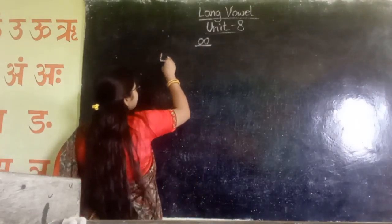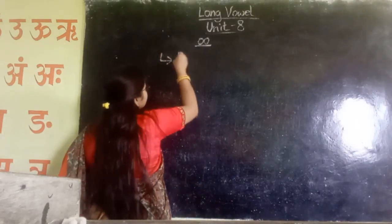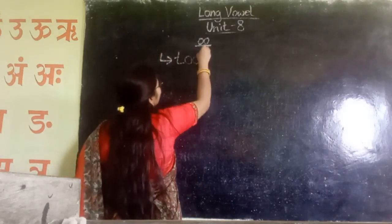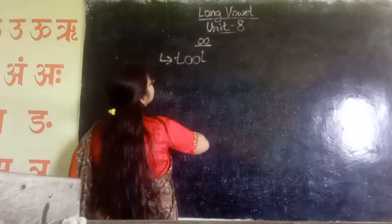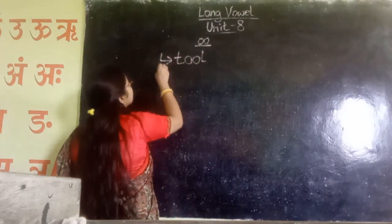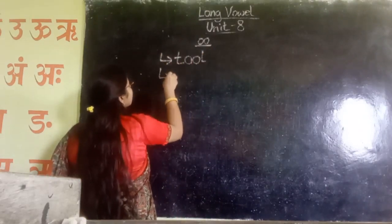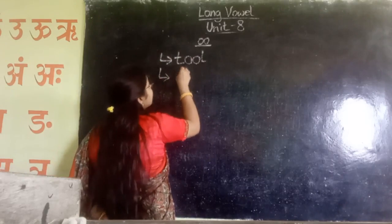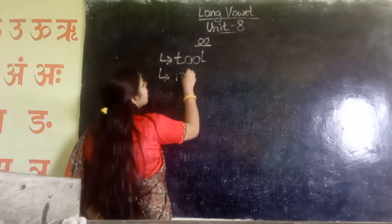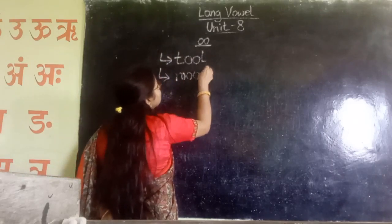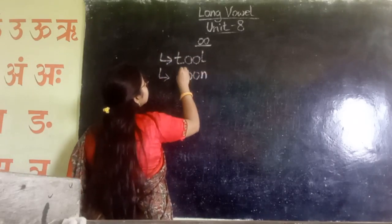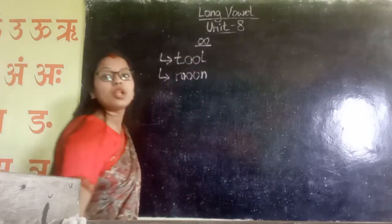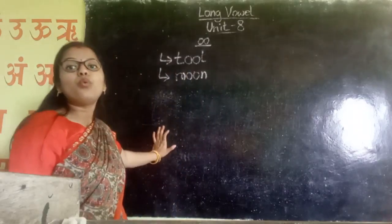Let's take our first word, that is TOOL — T, OO, TOOL. And MOON — M, OO, MOON.